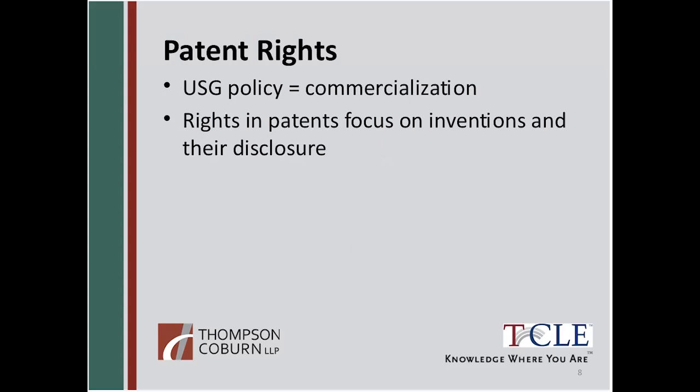If you have a subject invention, contractors can elect title to that subject invention. In turn, the government gets a paid-up royalty-free license to have that invention practiced by or on behalf of the government. So the government does not necessarily obtain title to that invention. Contractors, if they develop an invention under the government contract, will elect title to that invention, and the government gets a paid-up royalty-free, non-exclusive, non-transferable license to have that invention practiced on behalf of the government. Contractors can lose title if they don't elect title in a timely manner or fail to disclose the invention in accordance with the procedures and policies of the U.S. government.